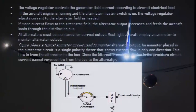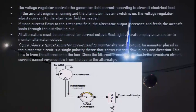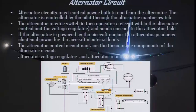The voltage regulator controls the generator field current according to aircraft electrical load. When the engine is running and the alternator master switch is on, the voltage regulator adjusts current to the alternator field as needed. If more current flows to the alternator field, the alternator output increases and feeds the aircraft loads through the distribution bus. All alternators must be monitored for correct output. Most light aircraft employ an ammeter to monitor alternator output.